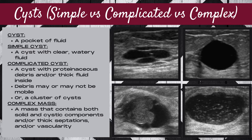A cyst is a pocket of fluid in the breast tissue. There are three categories of cysts: simple cysts, complicated cysts, or a complex mass. A simple cyst has clear, watery fluid inside. A complicated cyst either has proteinaceous debris and/or thick fluid inside — that debris may or may not be mobile — or it can also be a cluster of cysts.